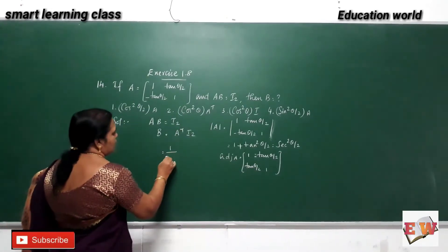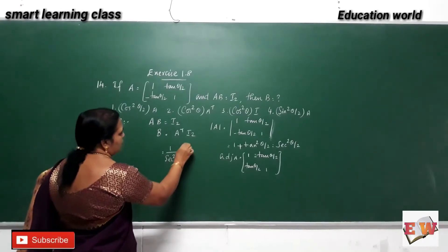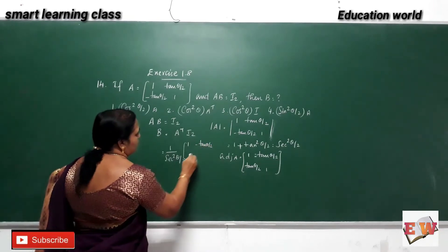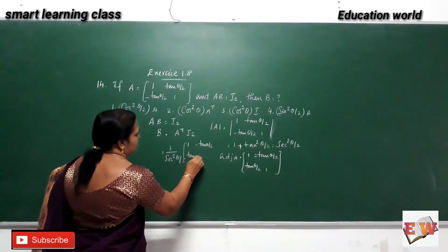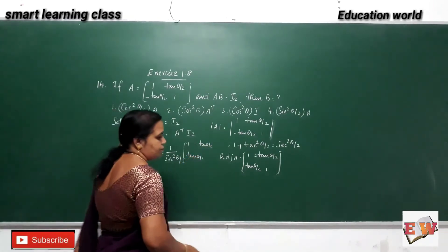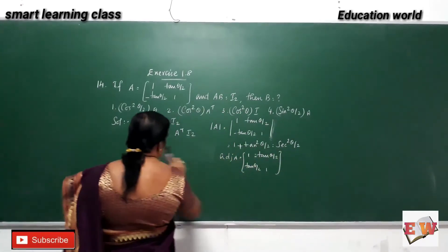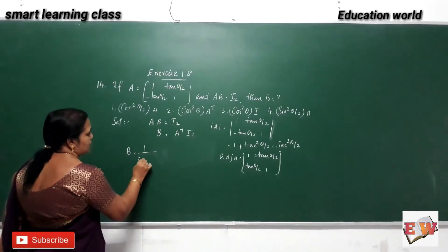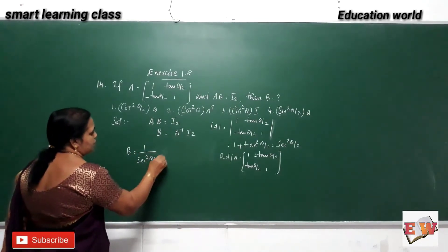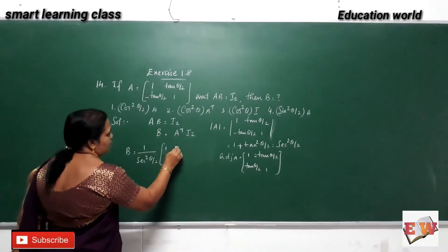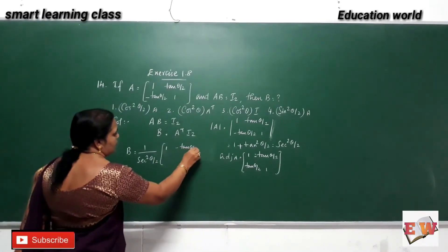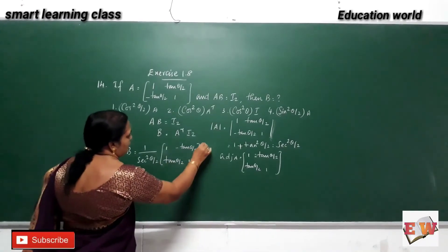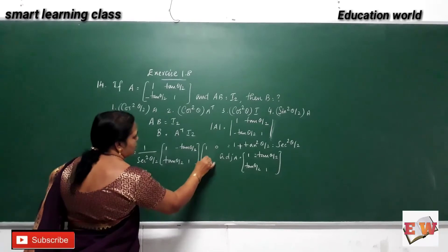Here we have to write 1 by secant square theta by 2. What is that? 1 minus tan theta by 2, tan theta by 2. 1 by secant square theta by 2, 1 minus tan theta by 2, 1 into 1, 0, 0, 1.